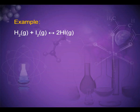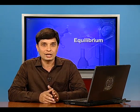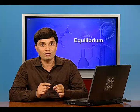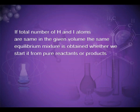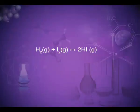Consider the reaction H₂ + I₂ ⇌ 2HI. If we start with equal initial concentrations of H₂ and I₂, the reaction proceeds in the forward direction and the concentrations of H₂ and I₂ decrease while that of HI increases until all become constant at equilibrium. We can also start with HI alone and make the reaction proceed in reverse — the concentration of HI decreases and those of H₂ and I₂ increase until constant. The same equilibrium mixture is obtained whether we start from pure reactants or products.